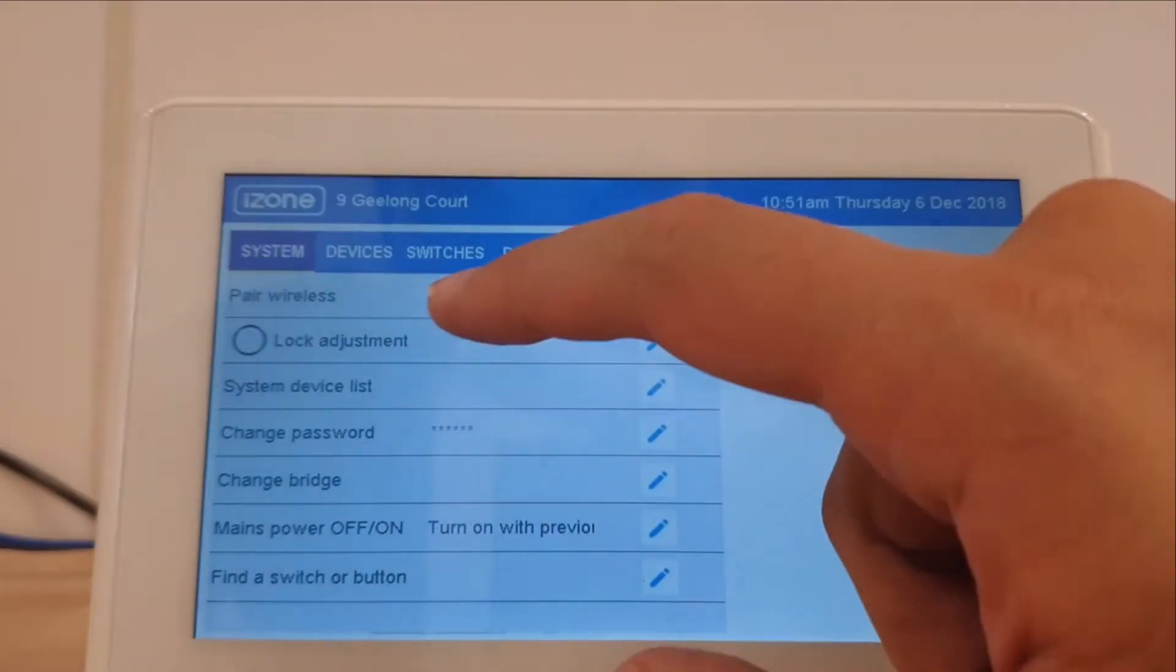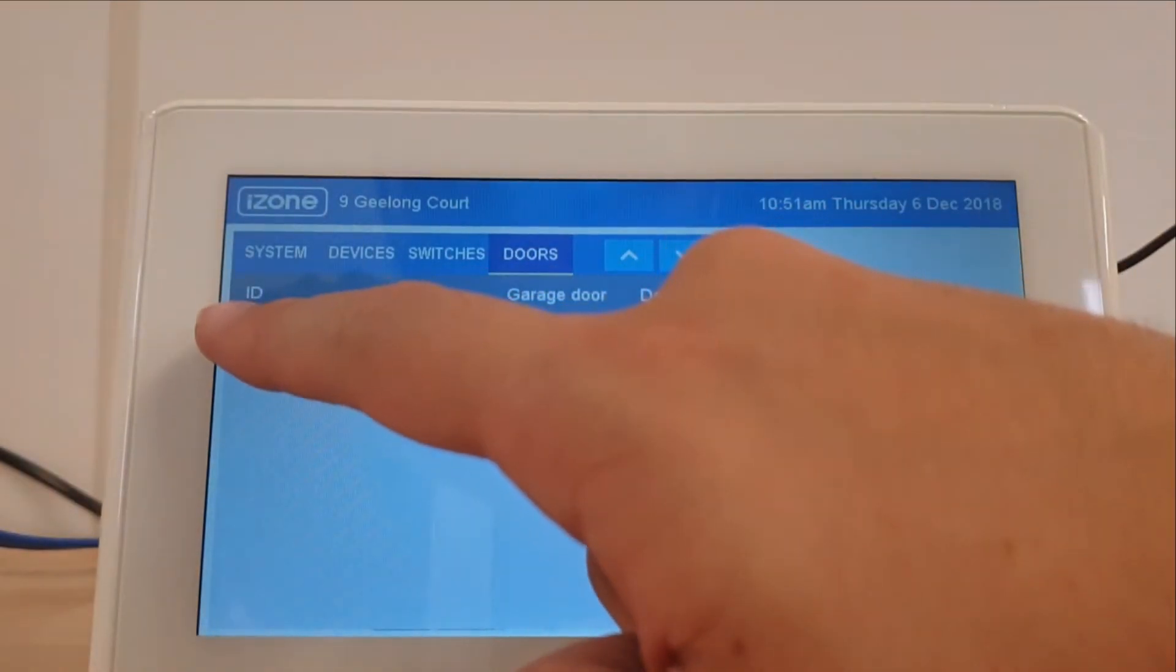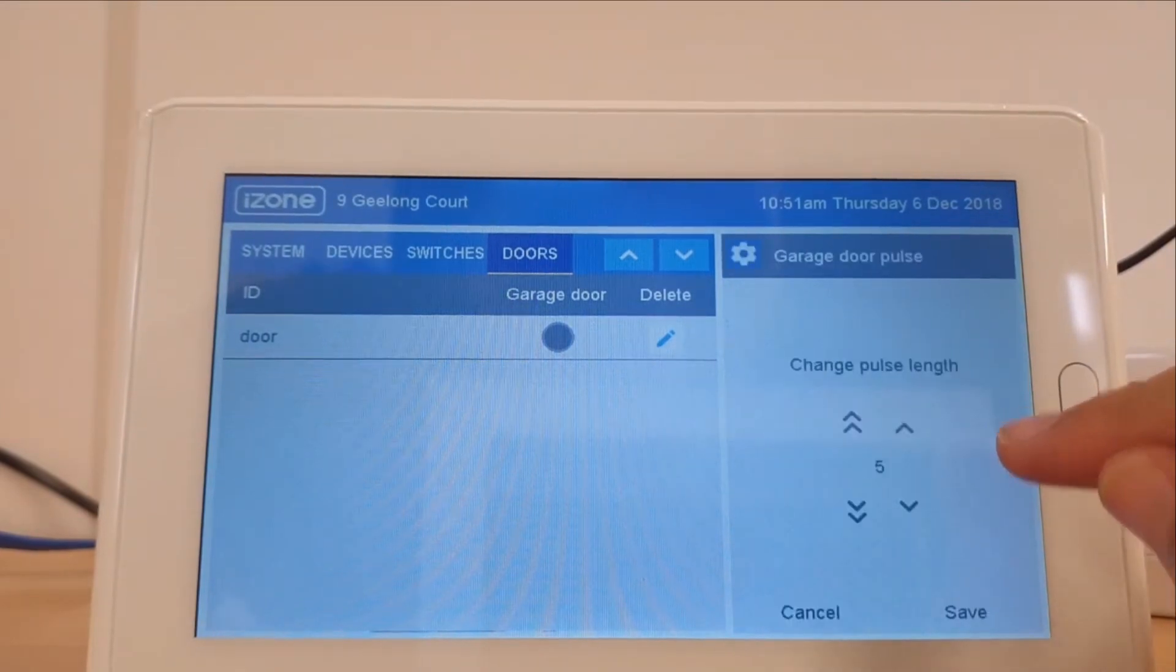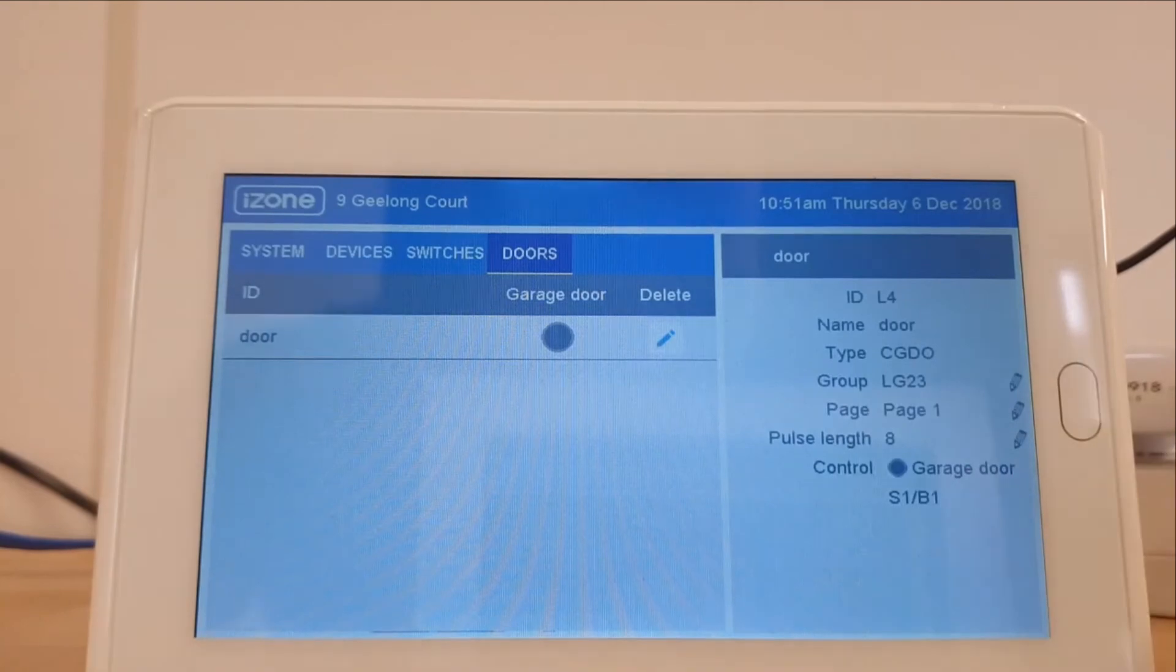If your door fails to close all the way, you may need to adjust the pulse length in the lighting config menu. While in the lighting menu, you'll need to select the doors menu, then select our garage door, and on the right hand side select pulse length and adjust the value, then press save.